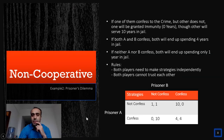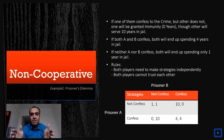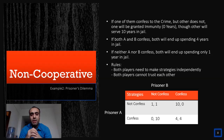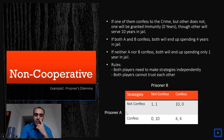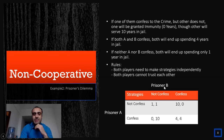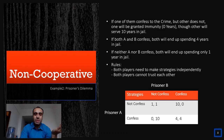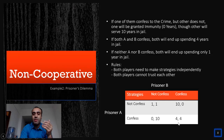Now we move to another non-cooperative example: the prisoner's dilemma. Suppose there are two prisoners caught at a crime scene. Police put them in separate jails with no communication. We call them prisoner A and prisoner B. If both decide not to confess, they each get one year in jail. If prisoner A confesses but prisoner B stays silent, prisoner B gets 10 years and prisoner A goes free with immunity. If both confess, they each get four years in jail.